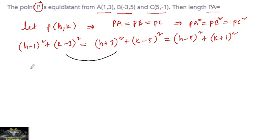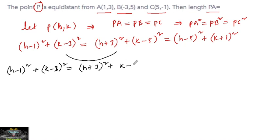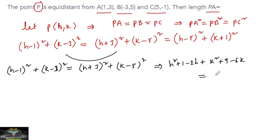Now let us equate the two expressions. (h−1)² + (k−3)² = (h−3)² + (k−5)². Expanding: h² + 1 − 2h + k² + 9 − 6k = h² + 9 + 6h + k² + 25 − 10k.